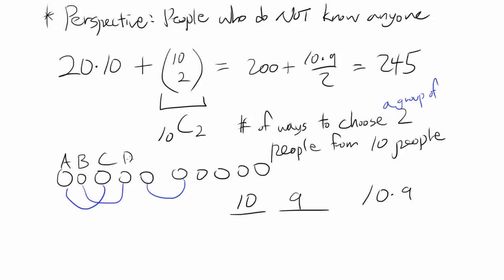Think of this as A, B, C, D, E, and so on. If A and B shake hands, and B and A shake hands, they're only shaking hands once. But doing 10 times 2 counts A, B and B, A once each. So this is double counting. To reduce double counting, the way to fix this is just by dividing by 2 to get 10 times 9 over 2. And 10 times 9 over 2 is 90 over 2 or 45.